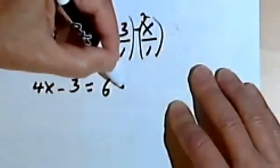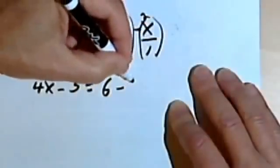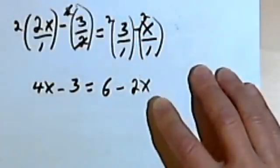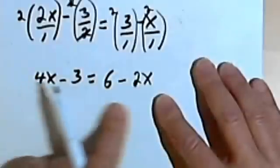And minus 2 times x over 1 will be 2x over 1. Once again, I don't need the 1. Now I've gotten rid of all my fractions.